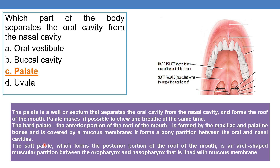The posterior portion of the palate is the soft palate. Soft palate forms the posterior portion of the roof of the mouth. It is an arch-shaped muscular partition between the oropharynx and nasopharynx, lined by mucous membrane.